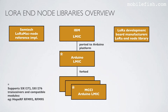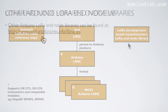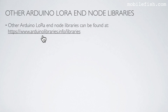Here is a global LoRa Node libraries overview. The Semtech LoRaMAC-Node is the reference implementation. The IBM LMIC library is ported to the Arduino platform and named Arduino LMIC. The Arduino LMIC library has been forked many times, and one of these forks is the MCCI Arduino LMIC library. These two libraries support the SX1272 and SX1276 transceivers and compatible modules like HopeRF RFM92 and RFM95. LoRa development board manufacturers also create their own LoRa Node libraries. Other Arduino LoRa Node libraries can be found at this location.